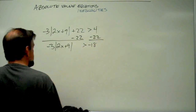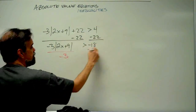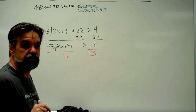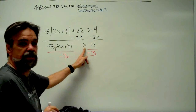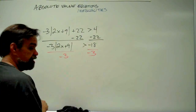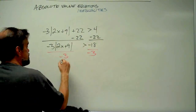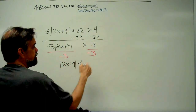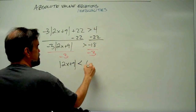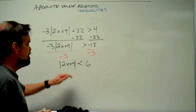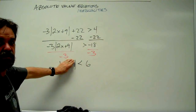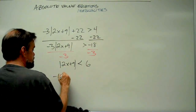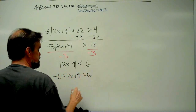Now divide both sides by negative 3 — and an alarm should go off: we're dividing by negative 3, so we have to change the direction of our inequality. So this becomes: the absolute value of 2x plus 9 is less than 6, since negative 18 divided by negative 3 is 6. If the absolute value of something is less than 6, it has to be between negative 6 and 6: negative 6 is less than 2x plus 9 is less than 6.